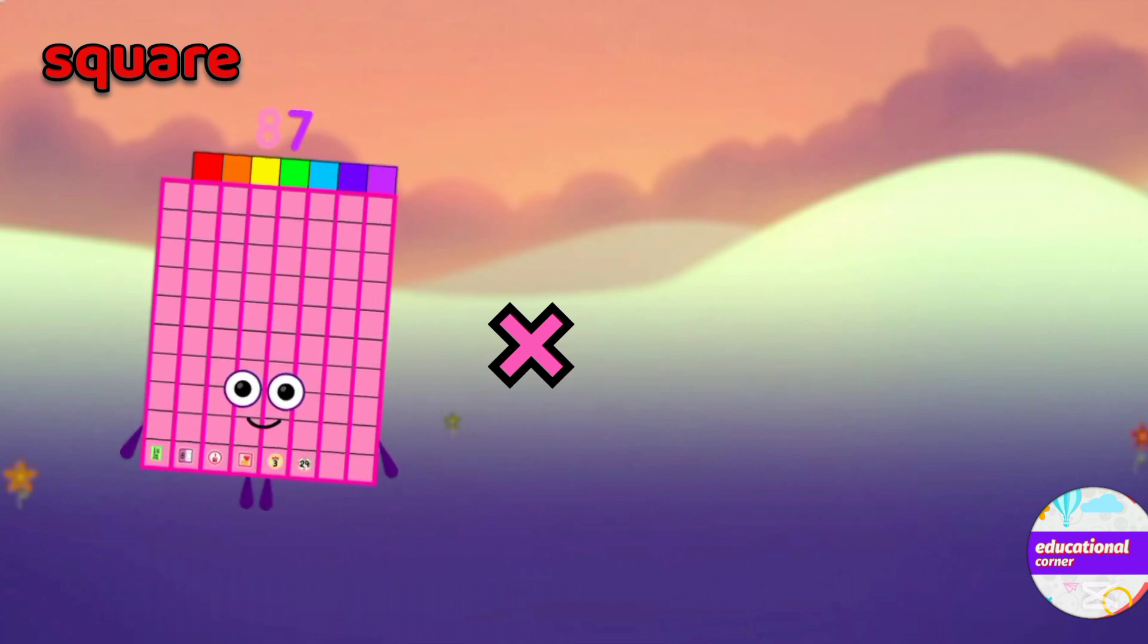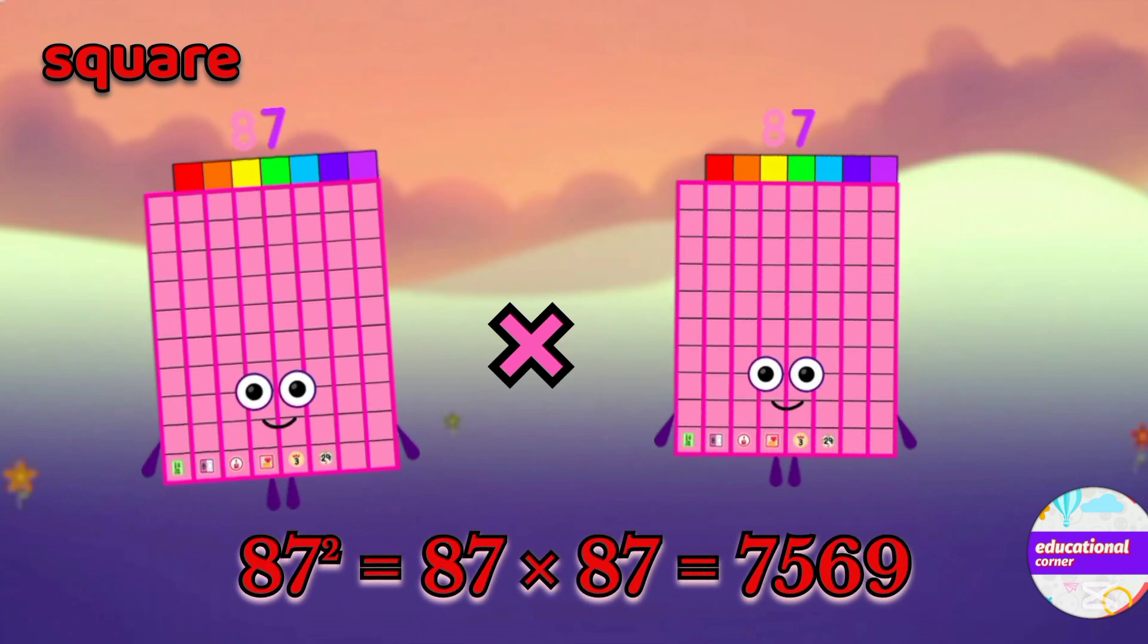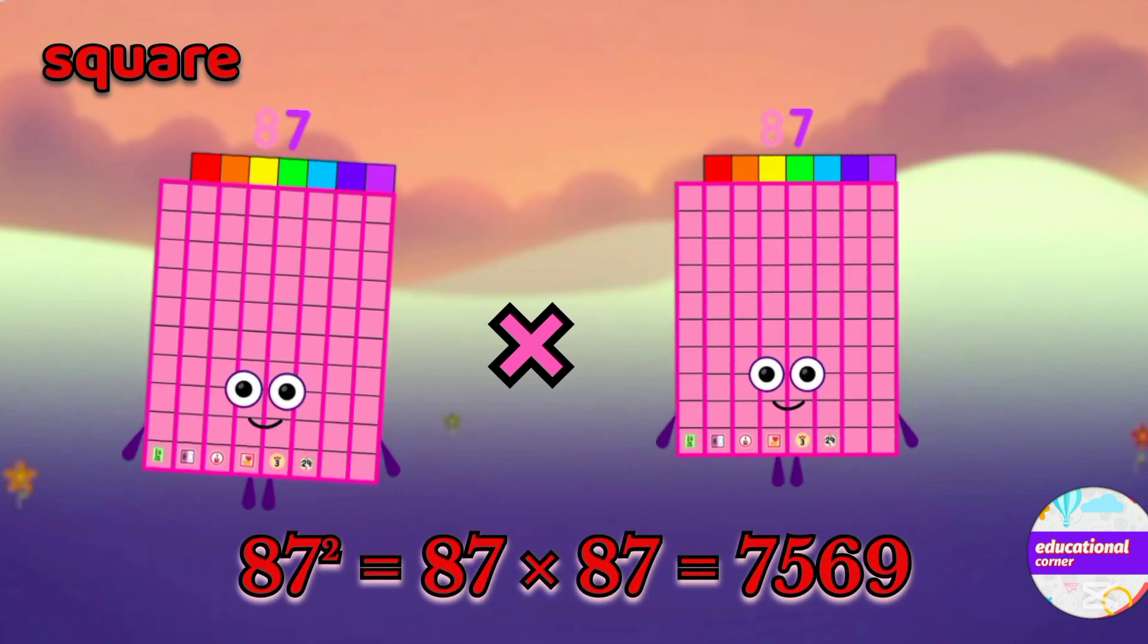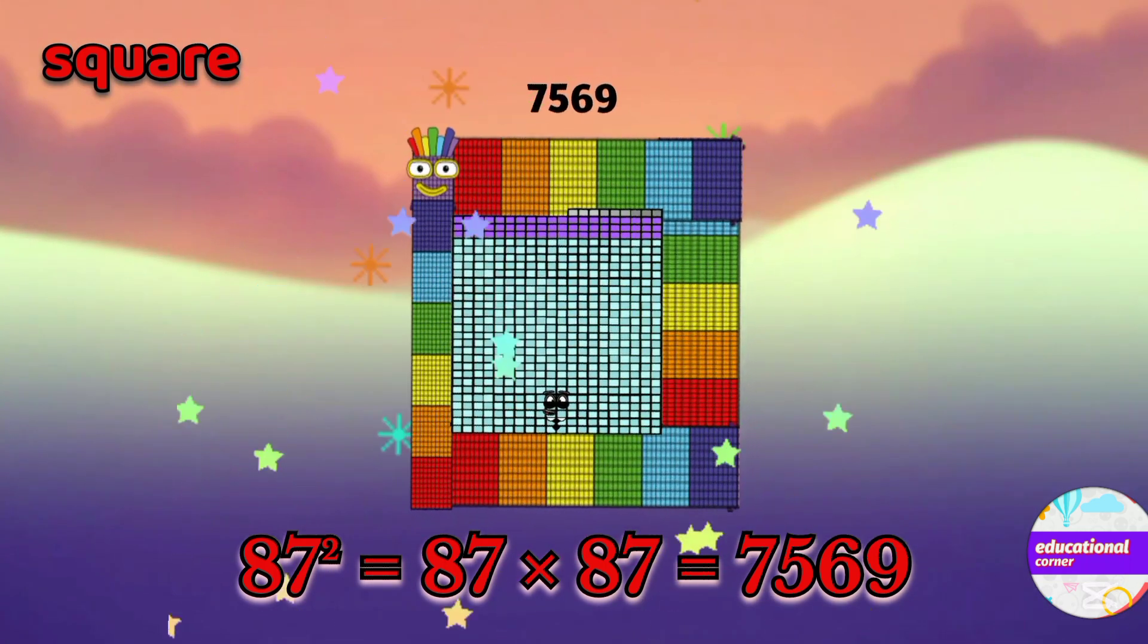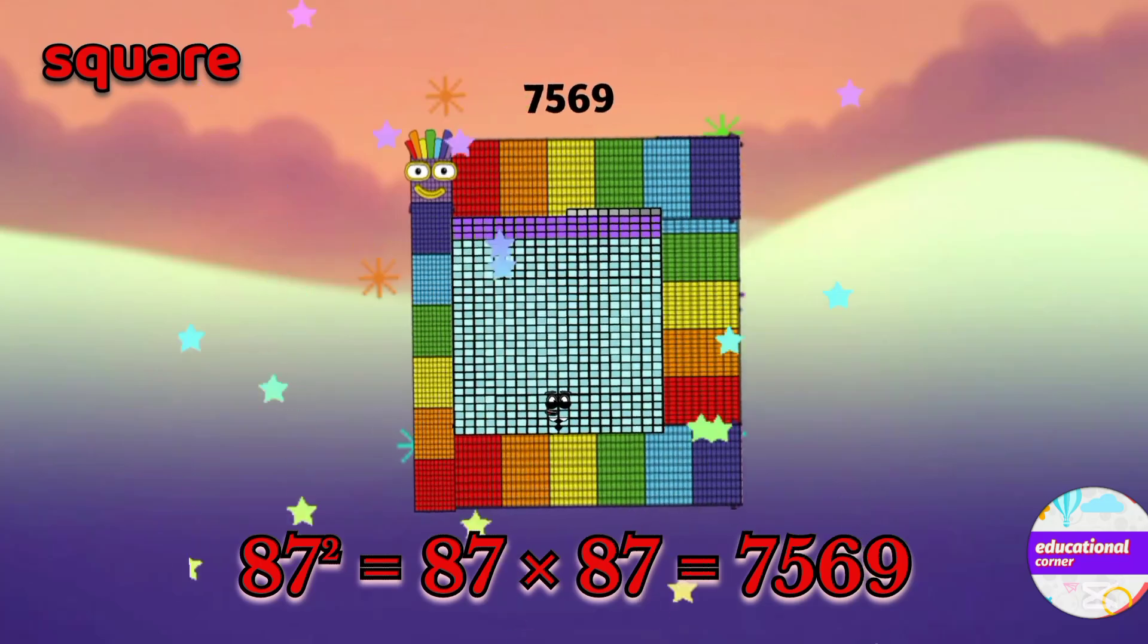87 multiply by 87. So the square of 87 is 7569.